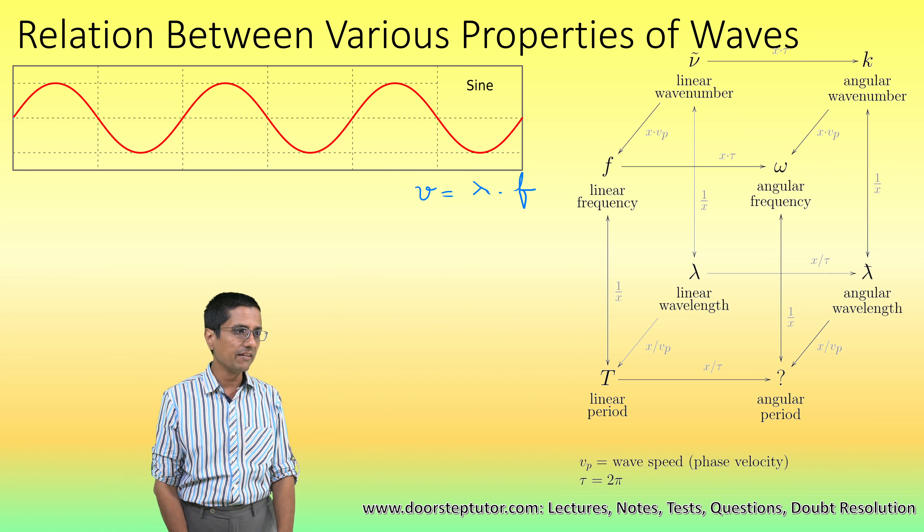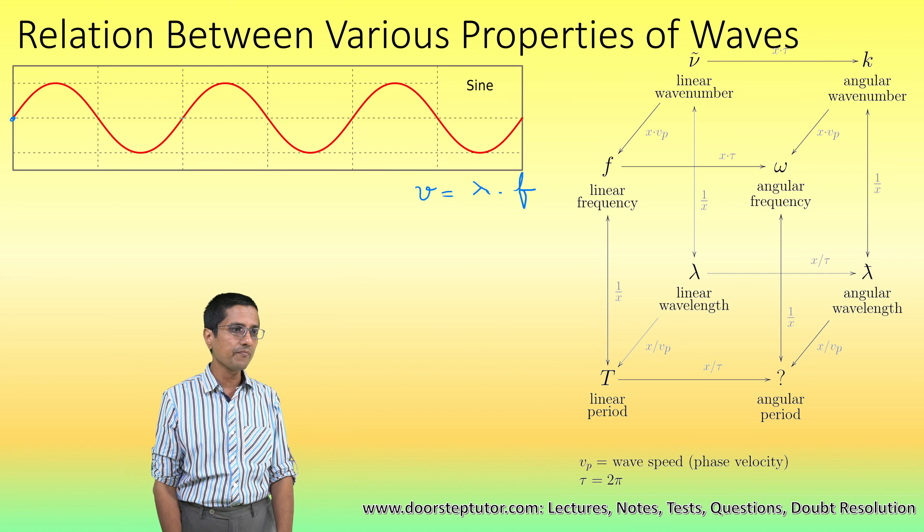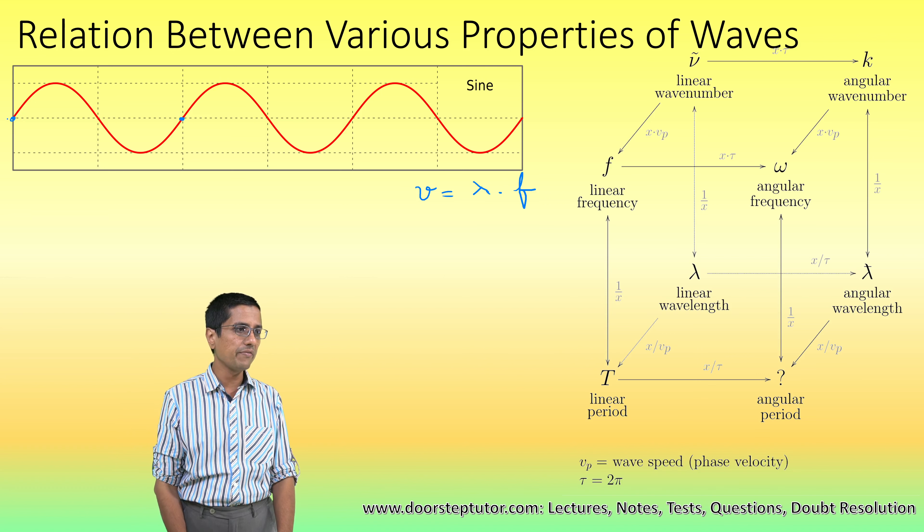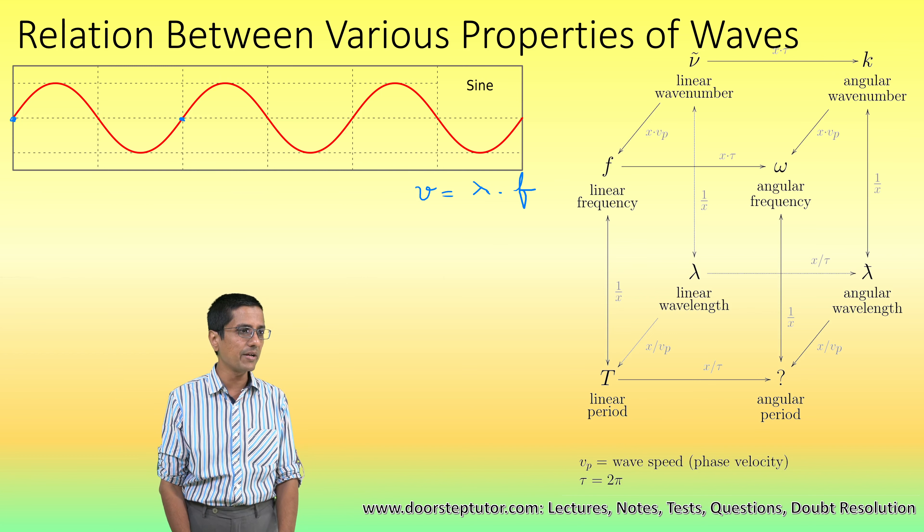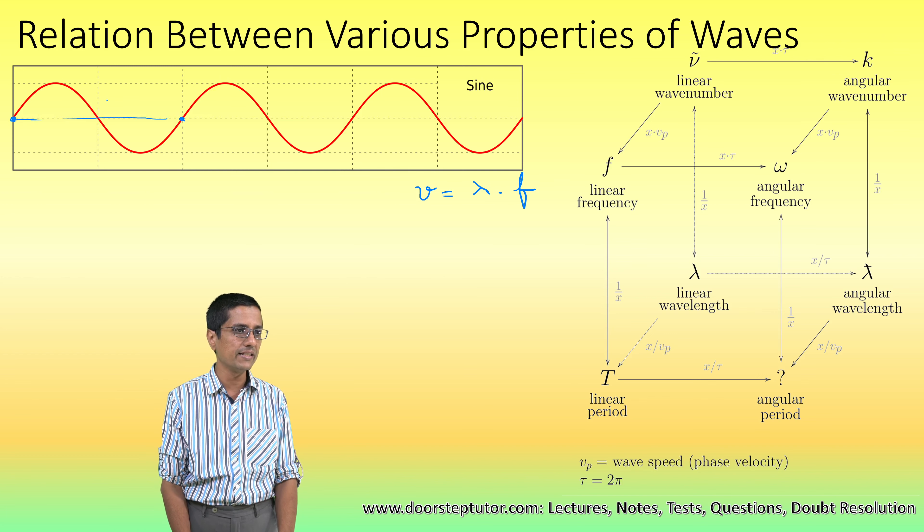Lambda is the wavelength. The wavelength is the distance on the wave between two points after which the wave pattern would actually repeat. So this is the lambda distance from here to here. This is lambda.